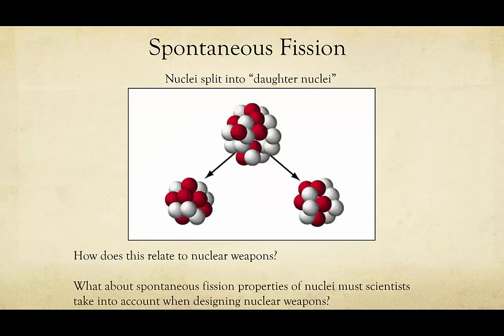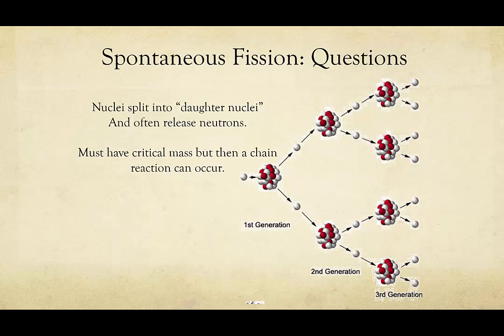Let's think about how this would relate first to nuclear weapons, because that's actually the simpler thing to describe than power and what we must take into consideration when we're designing these weapons. Both nuclear weapons and nuclear power rely on the fact that fission tends to be a chain reaction. If you are given a certain mass — what we call the critical mass of material — and you bombard it with neutrons, you will cause a certain number of the nuclei to split.